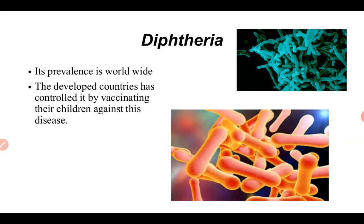Diphtheria is a serious infection which is caused by the strain of bacteria named as Corynebacterium diphtheriae. It is given the name of diphtheria because it makes a toxin like poison in the human body. It can lead to difficulty breathing, heart failure, paralysis, and even death. It was a fatal disease historically due to the lack of vaccination, but developed countries have controlled it by vaccinating their children against this bacteria.